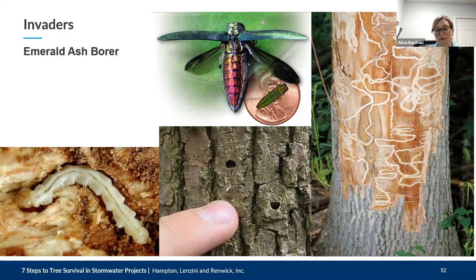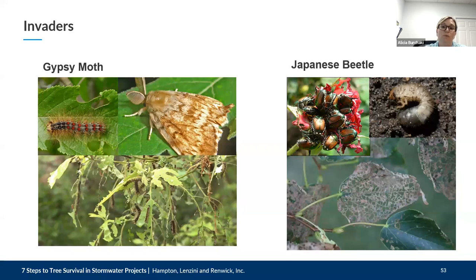Gypsy moth — a European native accidentally introduced to New England in the late 1800s in an attempt to rear an alternative silk-producing insect. In some areas it has changed the ecology of native forests, defoliating 13 million acres of woodlands in one season. In recent years the gypsy moth invasion has slowly moved westward with established populations in Michigan, Wisconsin, Indiana, and Illinois. It's a general feeder devouring more than 450 species of plants.